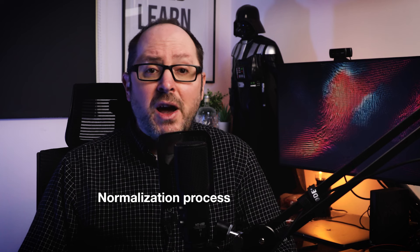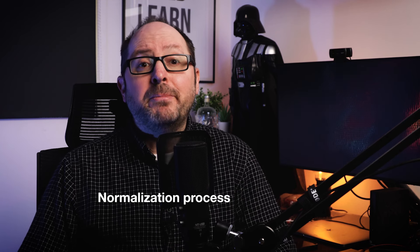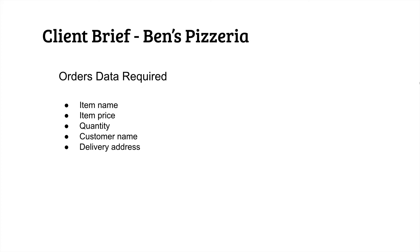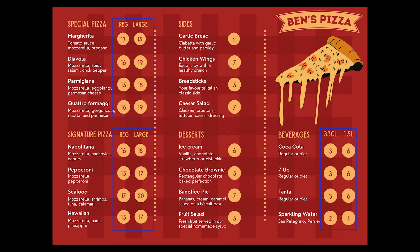There are three main areas that the brief requires us to concentrate on: customer orders, stock levels and staff. We're going to start with customer orders. The way we're going to approach designing our database and the tables in it is to spec out all of the fields for the data we want to collect. Then we'll go about the process of normalizing the data, adding more related tables and defining the table relationships. Ben has given us a list of the different data he'd like to collect for each order: item name, item price, quantity, customer name and delivery address. We know we'll need to include an order ID field, split out the delivery address into different parts, include different sizes of pizzas and beverages, and a field for the product category — so pizza, sides, desserts and beverages.